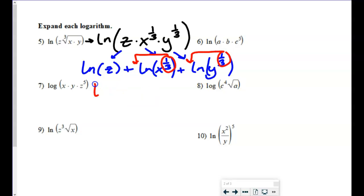And you'll end up with the natural log of z, plus one third natural log of x, plus one third natural log of y. That's really hard to read, I apologize.